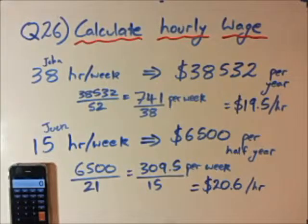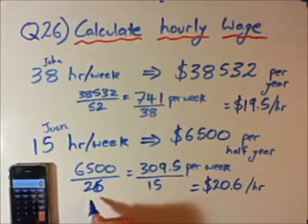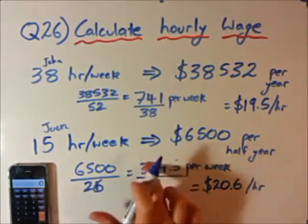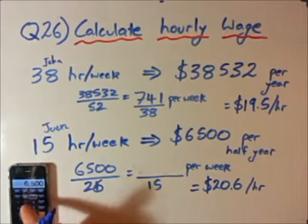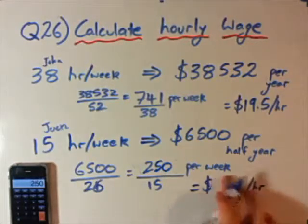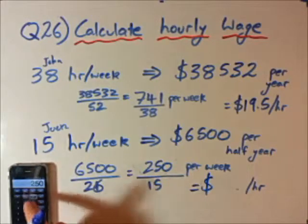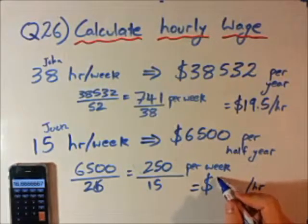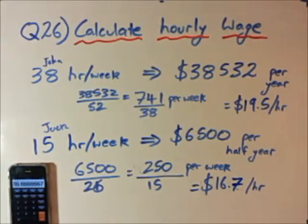Actually, I made a silly error — there are not 21 weeks per half year. 52 divided by 2 is actually 26 weeks per half year. So the correct calculation is $6,500 divided by 26, which gives $250 per week. Then 250 divided by 15 gives approximately $16.70 per hour. So Jack actually earns less than John.